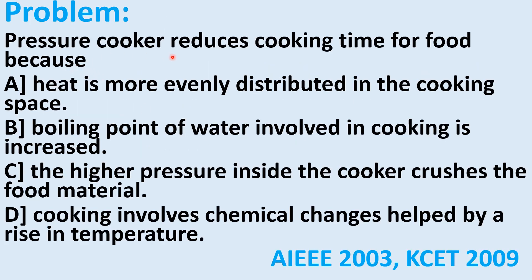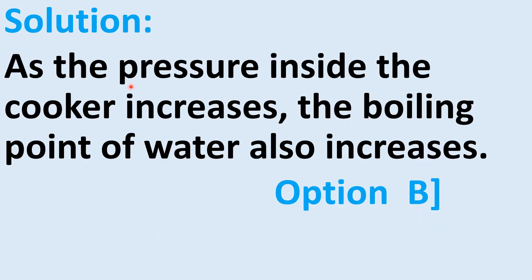A pressure cooker reduces cooking time for food because: option A heat is more evenly distributed, option B boiling point of water involved in cooking is increased, option C higher pressure crushes the food, option D cooking involves chemical changes helped by a rise in temperature. As pressure inside the cooker increases, the boiling point of water also increases. Therefore option B is correct.